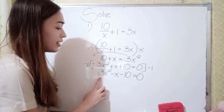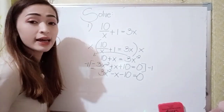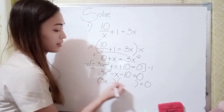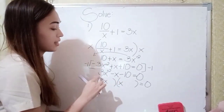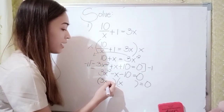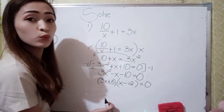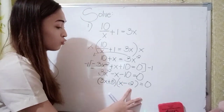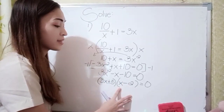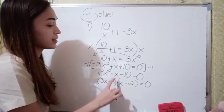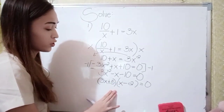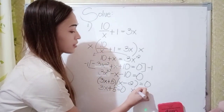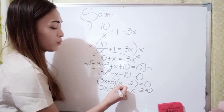Next, let's factor 3x squared minus x minus 10 equal to 0. It will become 3x times x, since 3x times x is 3x squared. We have positive 5 and negative 2, because 5 times negative 2 is negative 10. Then 3 times negative 2 is negative 6, and 5 times x is 5x, so negative 6 plus 5x gives negative 1x. Equate each factor to 0: 3x plus 5 equal to 0, and x minus 2 equal to 0. Transpose to the right.